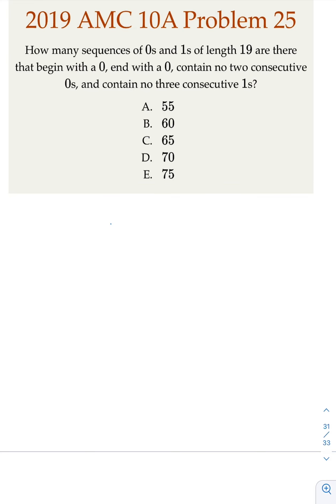So we have a bunch of 0-1s, then 19. Start and end with 0. No consecutive 0s. So in other words, if you have 0, you have to have 1 afterwards.